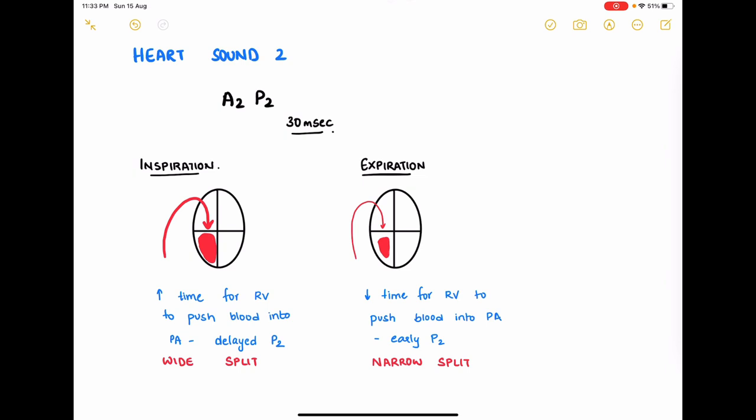While during expiration the venous return to the right heart is slightly lesser. As there is less blood in the right ventricle it needs less time to push this into the pulmonary artery and thus the pulmonic valve closes a little earlier when compared to that during inspiration. So there is a narrower split of the second heart sound during expiration when compared to that during inspiration. This is physiological and it is normal.